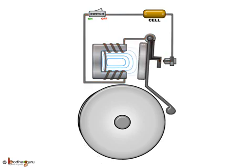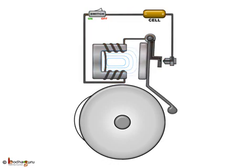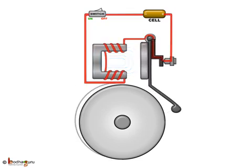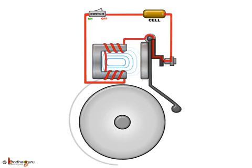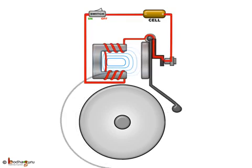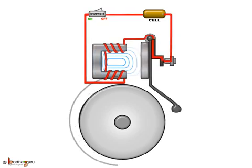But, it also broke the circuit and stopped the current flow. Due to this, the electromagnet lost its magnetic power and the clapper went back to its original position, making the contact with the screw again. This made the circuit complete and again the clapper struck the gong.